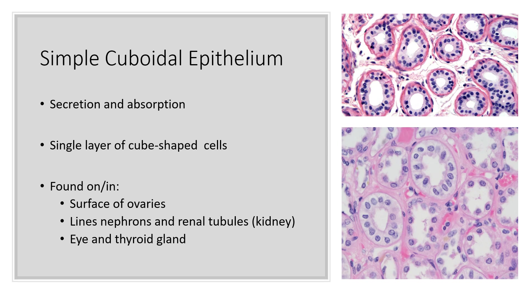Simple cuboidal epithelium functions in secretion and absorption. It's just a single layer of cube-shaped cells found in the surface of the ovaries. It also lines the nephrons and the renal tubules of the kidney, and you can find simple cuboidal epithelium in the eye and the thyroid gland. Make sure that as we go through these you are looking at the microscope pictures of the different epithelial tissue types.